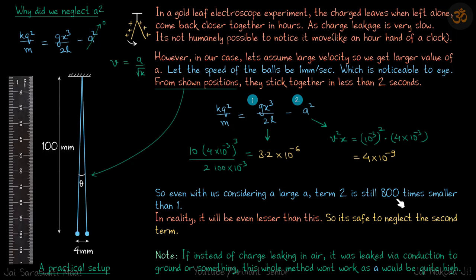Here it is 800. In reality, it will be probably even 10 times, so 8000 times smaller it can be. We have assumed the high value of A. Still, it's very small compared to this. In reality, A square will be even further small.